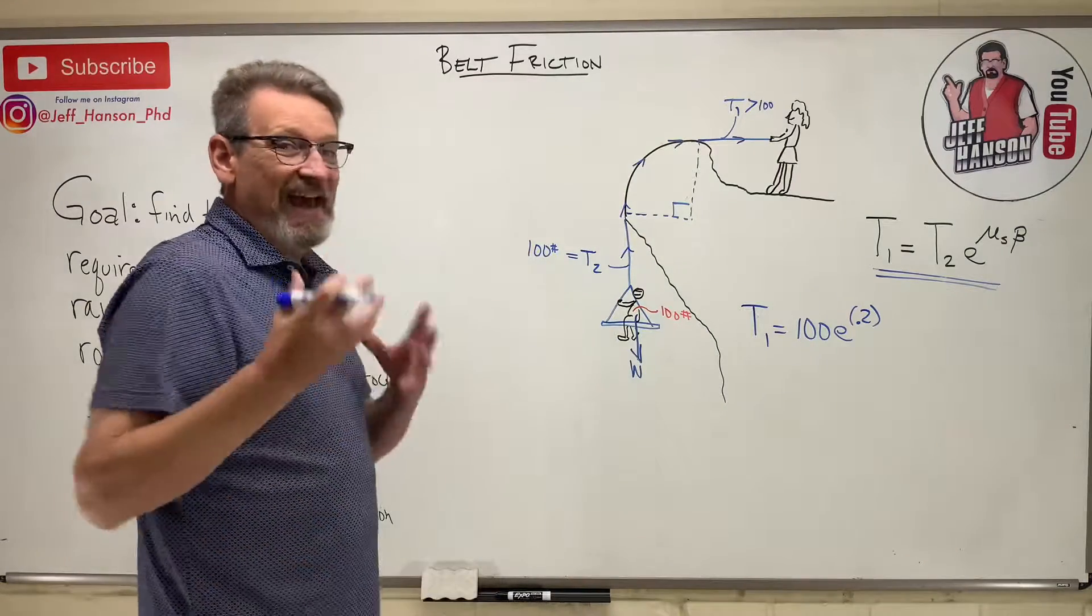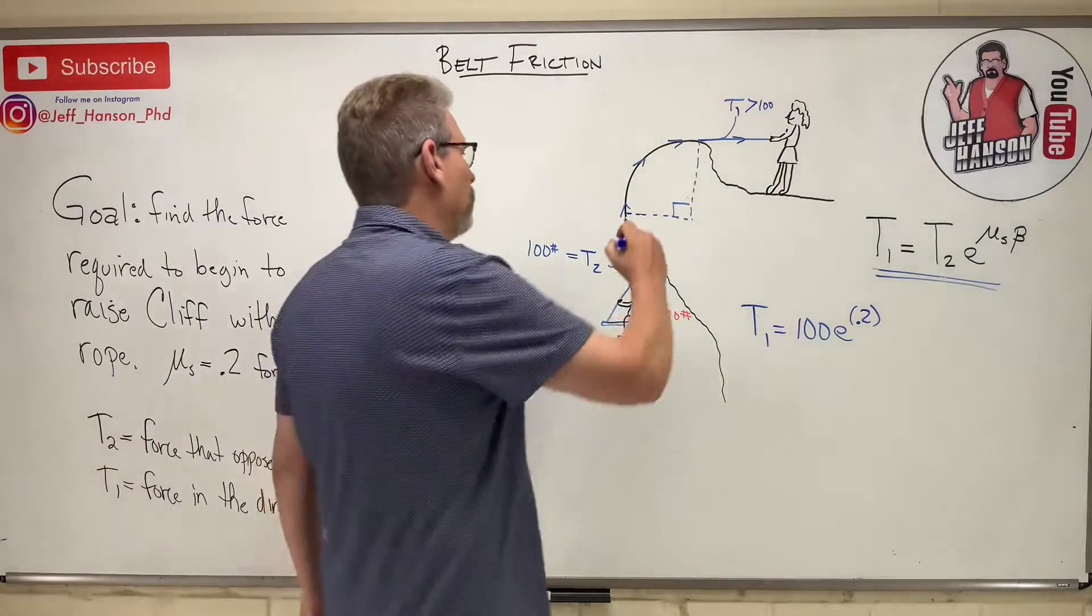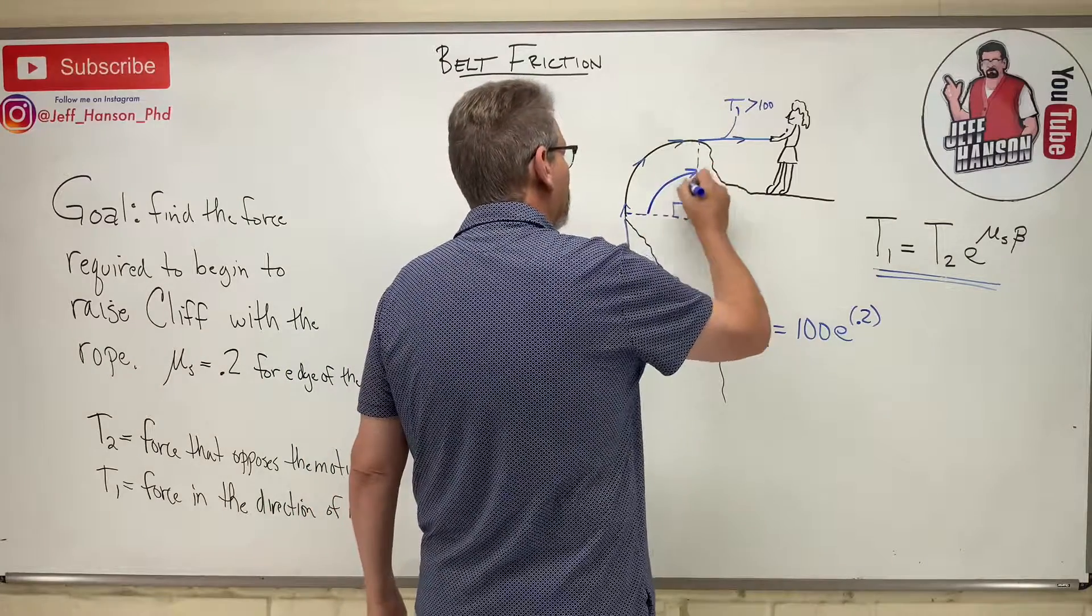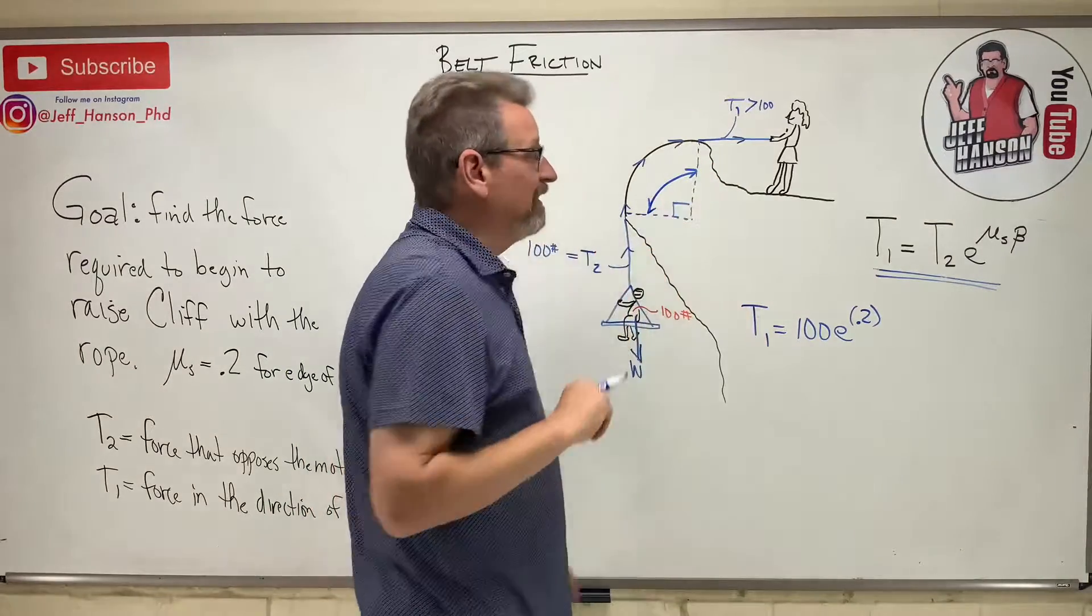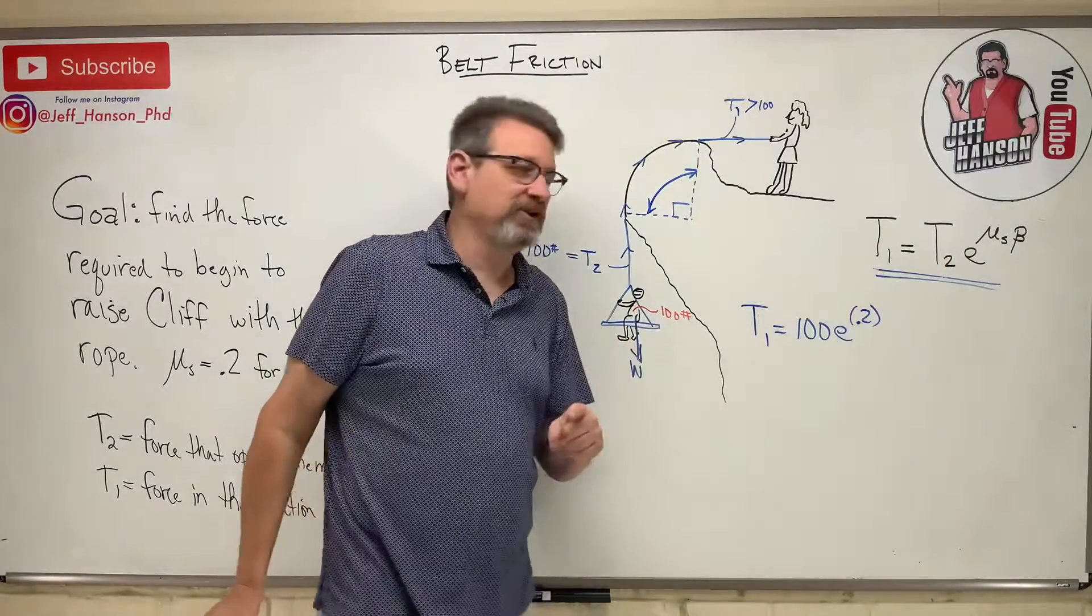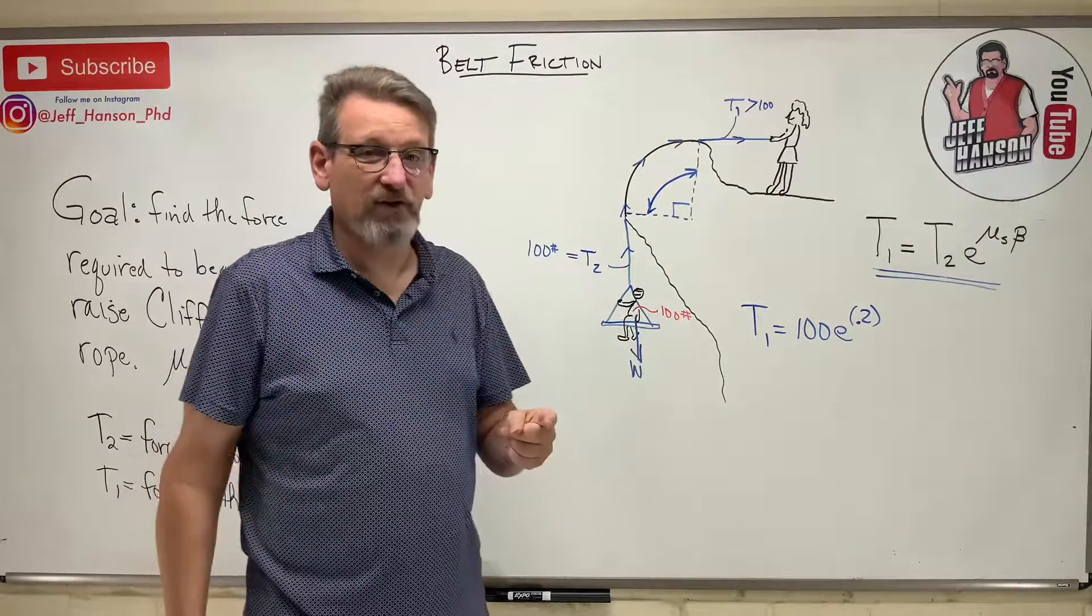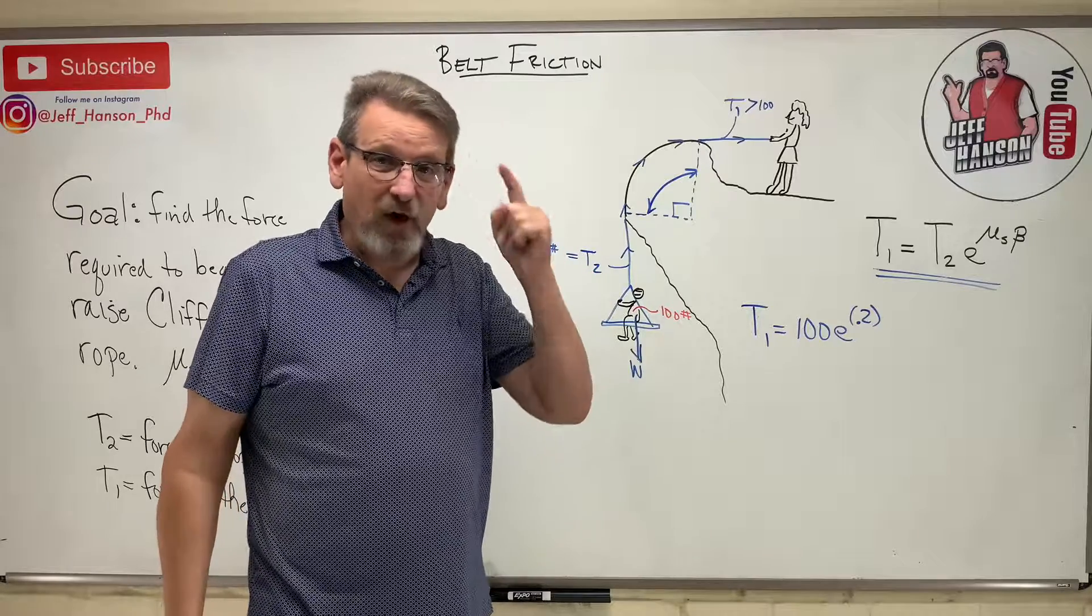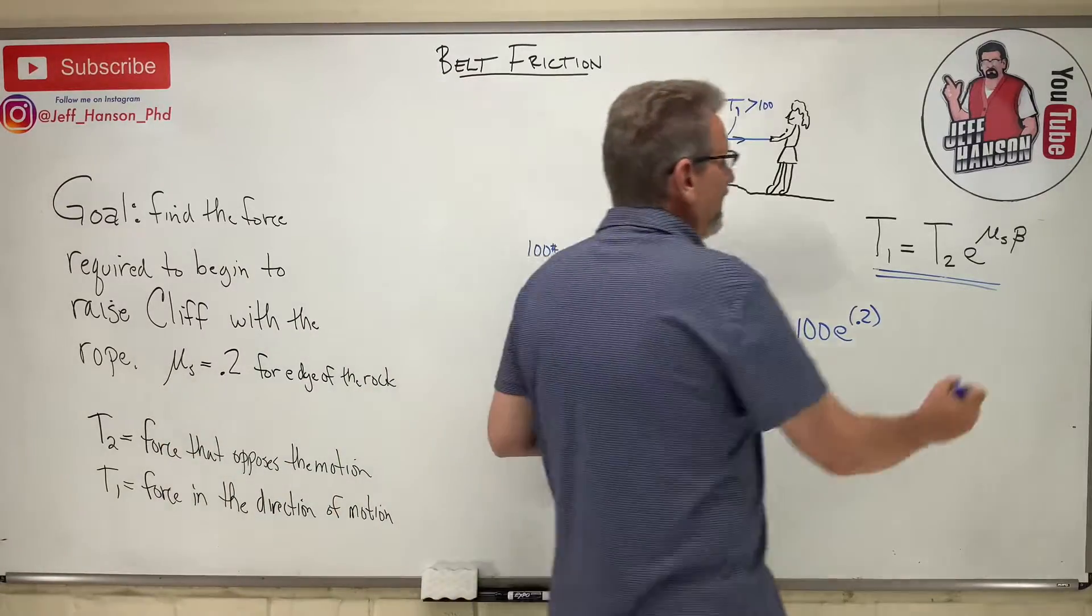What is beta? Well beta is just the angle of contact. So it would be this angle right here. Now when you see an angle with no sine, no cosine in front of, no trig function at all, then what do you have to do there?